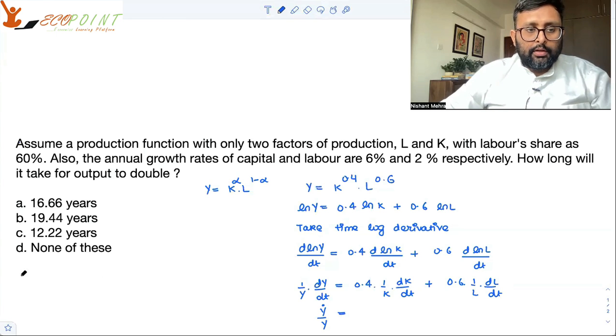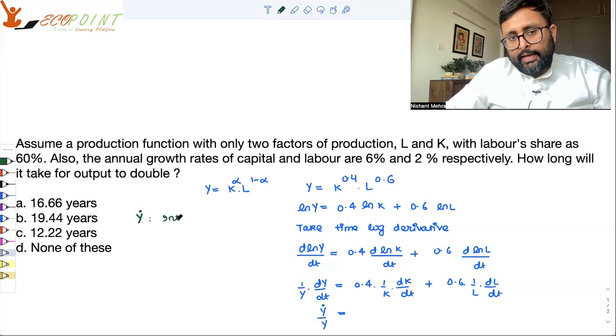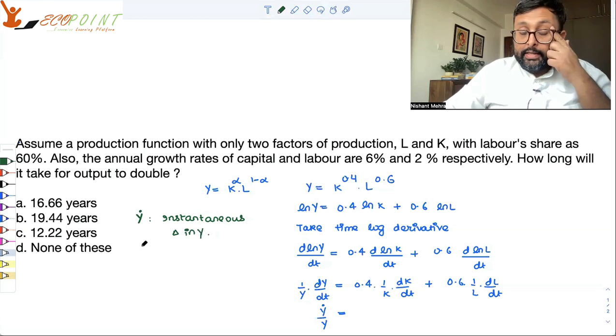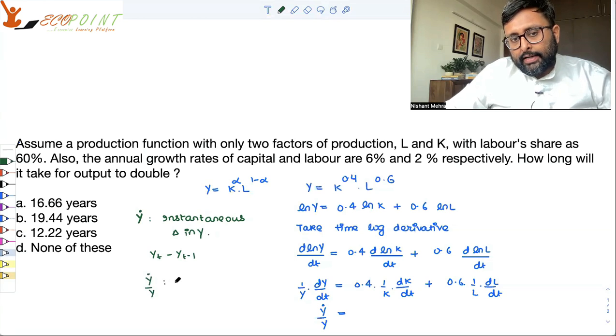But when I write Y dot, maybe I have told this earlier, but let me just write this once more. When I write Y dot, that is instantaneous change in Y. It is like Y_t minus Y_(t-1). But if I am going to divide Y dot by Y, that is the growth rate in Y. I hope you are writing it alongside me.